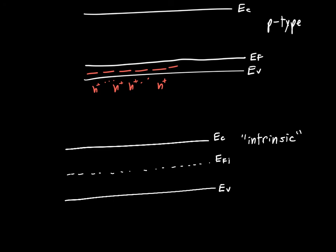So this intrinsic Fermi level allows us to easily visualize if I've got a Fermi energy near the top, above the intrinsic Fermi level, it's definitely an n-type semiconductor. If I've got a Fermi level near the bottom, below the intrinsic Fermi energy level, then it's a p-type semiconductor.